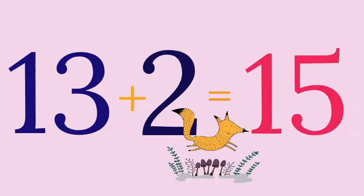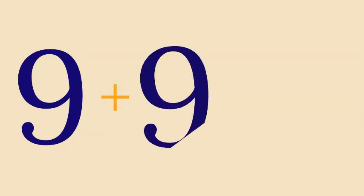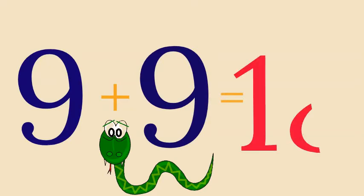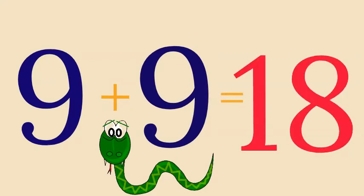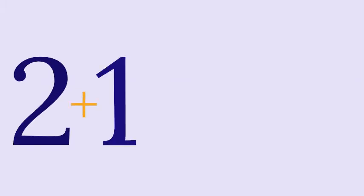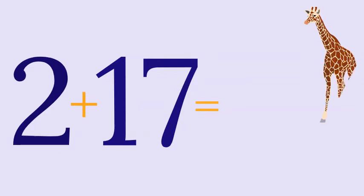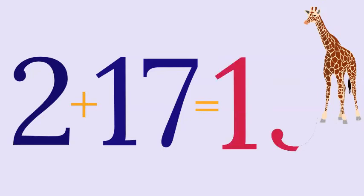9 plus 9 equals 18. 2 plus 17 equals 19.